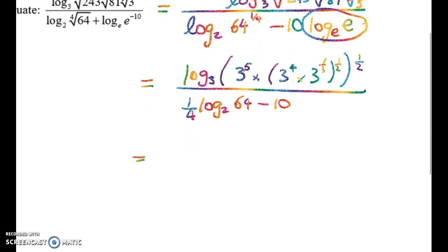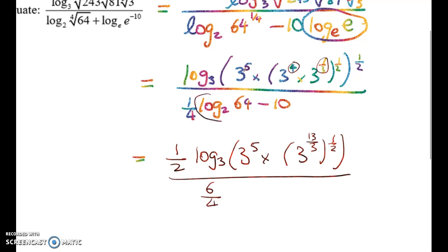So cleaning up again and changing pen colour, I get 1 half log to base 3 of this. 3 to the power of 5 times 3 with these. I'm going to add the powers. 3 to the power of 13 over 3 to the power of a half, divided by 6 over 4, right, log to base 2 of 64 is 6. So 6 over 4 minus 10, and we can simplify that to 3 over 2.